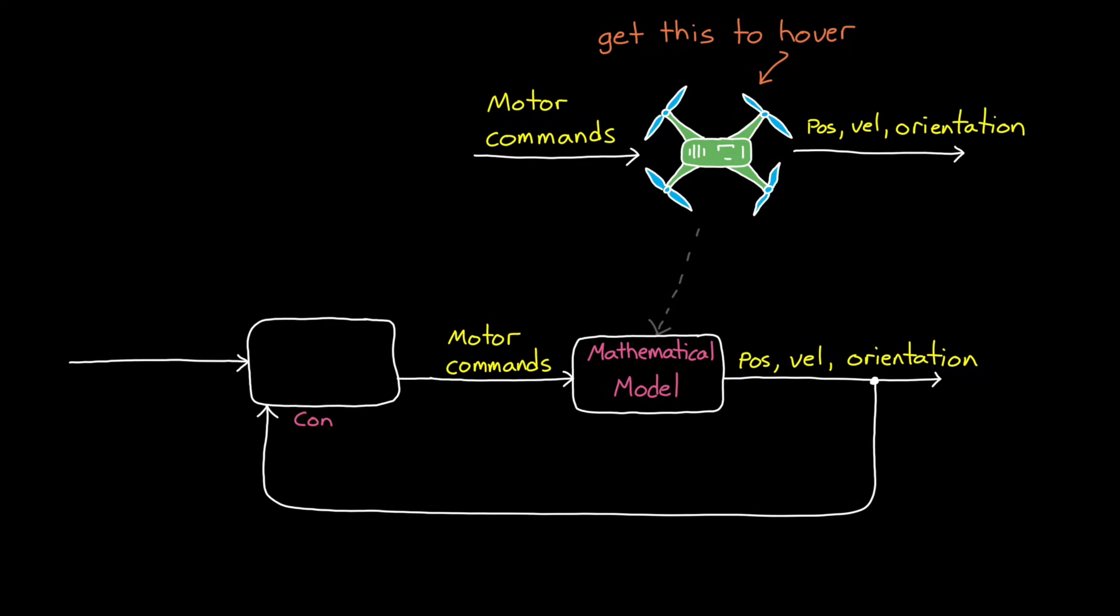And then you use that model to design a controller, which is just another mapping that takes a reference signal and a system state as inputs, and then outputs the controlled variables. And these are the things that we can use to affect the behavior of the process.